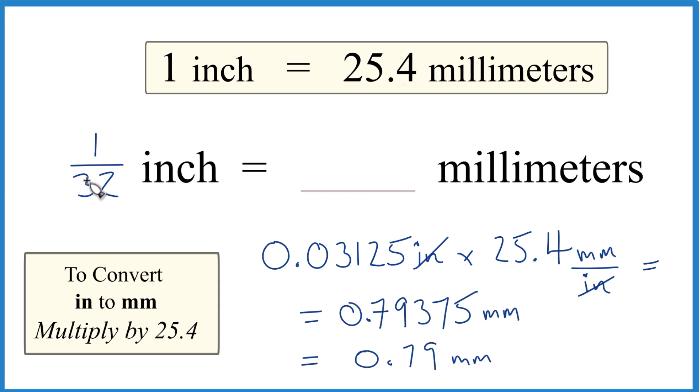So in answer to our question, 1 over 32, 1/32 of an inch is equal to 0.79 millimeters.